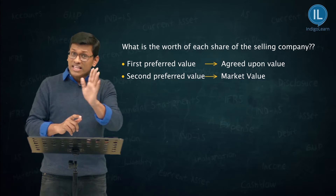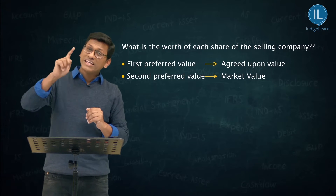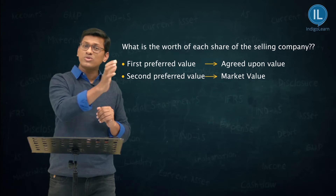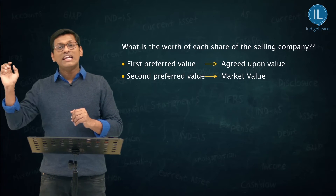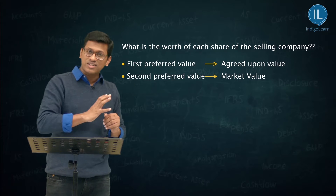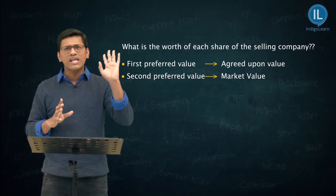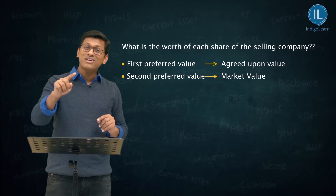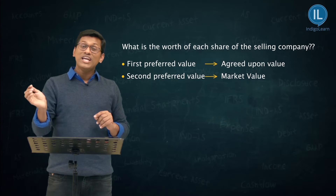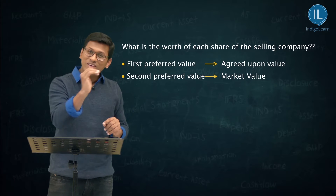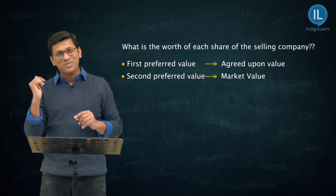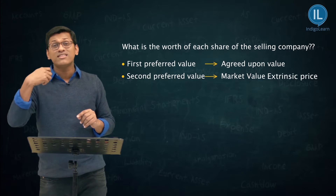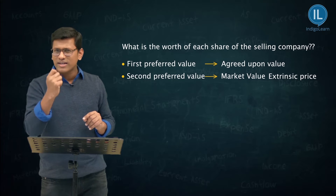But listen carefully. In the question, if you have an agreed upon value where B's one share equals 70 and you also have a listed price of B's share at 60, don't say higher of the two or lower of the two. You should first prefer the agreed upon price. If agreed upon price is not given, then you come to market value — we also call this extrinsic price.